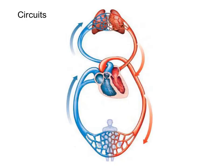In the human body, a circuit is a closed loop that starts and finishes at the same place, and there are two circuits of the cardiovascular system. The first circuit is between the heart and the lungs, and this is called the pulmonary circuit. The second circuit is between the heart and the body, and we call this the systemic circuit.